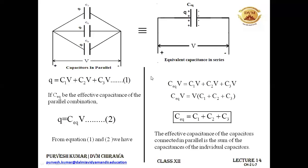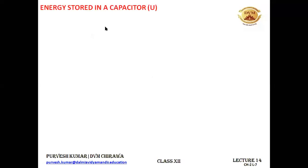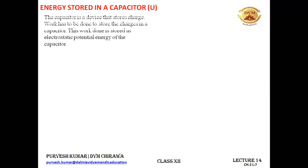The next topic is energy stored in a capacitor, denoted by capital U. A capacitor is a device which stores charge, and work must be done to store charge on it. This work done gets stored in the form of electrostatic potential energy of the capacitor.